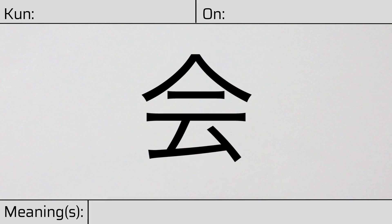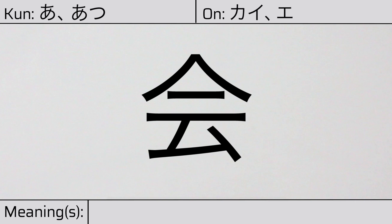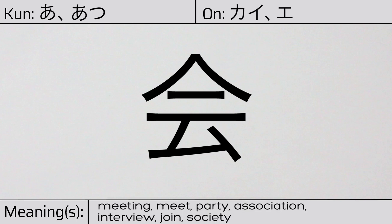Welcome to this lesson on Japanese Kanji. Today, we'll be discussing this character. This Kanji has kunyomi or Japanese readings of a, or atzu. And it has onyomi or Chinese readings of kai or e. This character has the meanings meeting, meet, party, association, interview, join, or society.